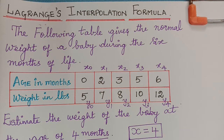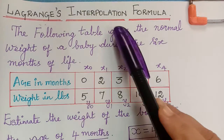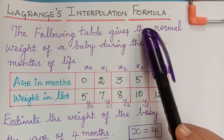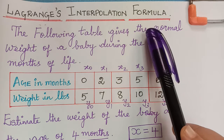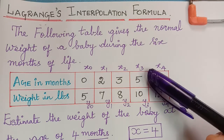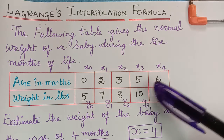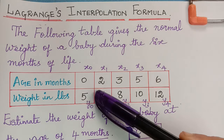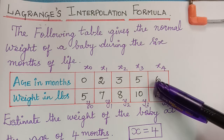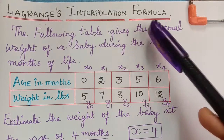Dear students, under the topic interpolation, the third formula that we are going to learn is Lagrange's interpolation formula. Previously, we have learned Newton's forward interpolation formula and Newton's backward interpolation formula, which can be applied to interpolate the value corresponding to an argument x only if the set of values x1, x2, etc. up to xn are equidistant values. If these values of x are not equidistant, then Newton's method is not applicable. In such a situation, we can apply Lagrange's interpolation formula.